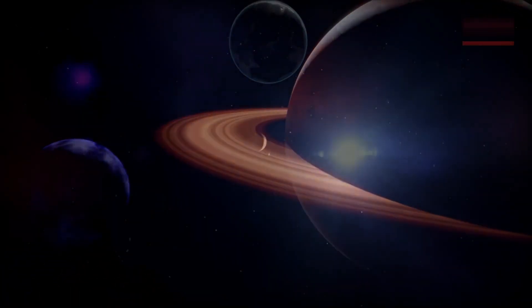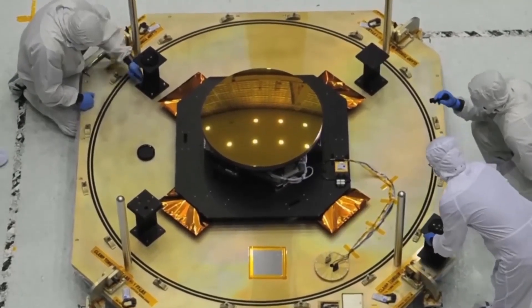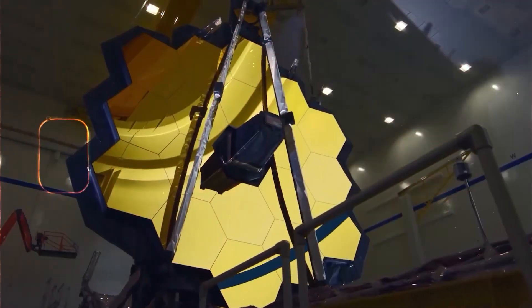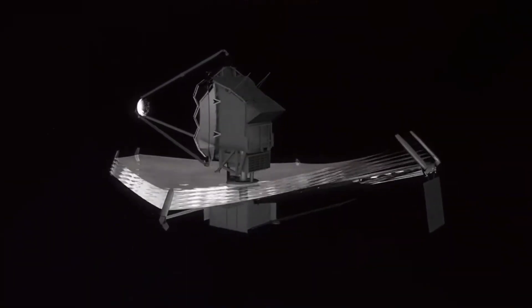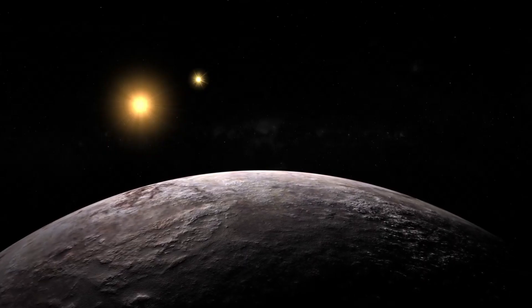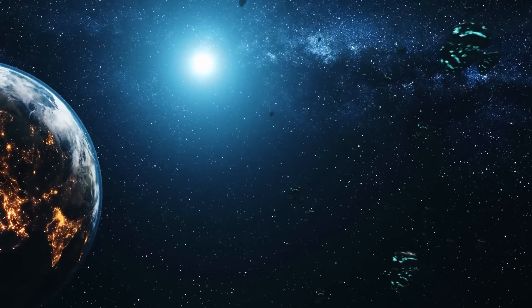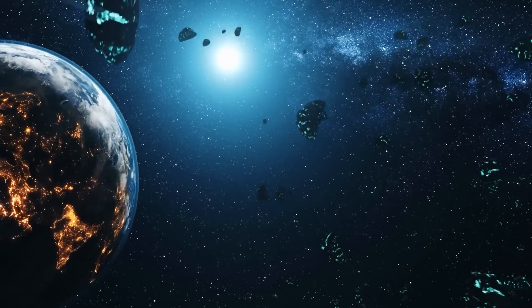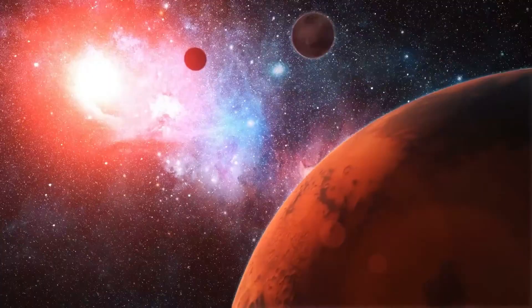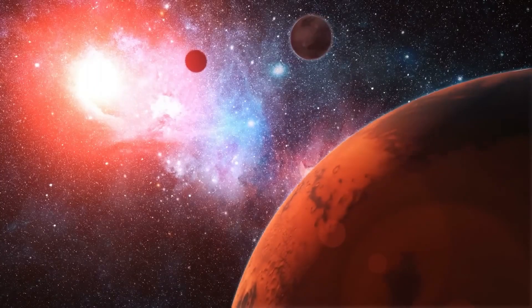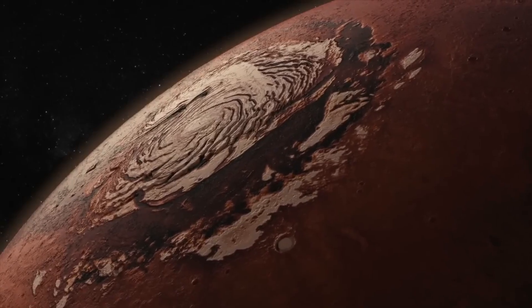If Proxima b has the right conditions, it could potentially support life, making it a prime target for future studies. However, several factors influence whether Proxima b can actually harbor life. First, scientists must consider the planet's size and composition. Proxima b is roughly 20% larger than Earth, placing it in the category of an Earth-like planet. Its mass is also comparable to Earth's, suggesting it could have a similar rocky composition. However, researchers still don't know for certain what the planet's atmosphere is like or whether it has one at all. The presence of an atmosphere is crucial for maintaining liquid water on the surface, as it helps regulate temperature and pressure. Without an atmosphere, any water on the planet would likely freeze or evaporate.